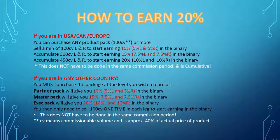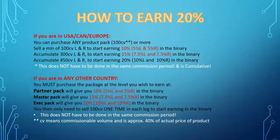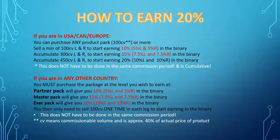How do you earn 20%? If you're in the USA, Canada, or Europe, you can purchase any of our product packs — you want that to be 100 CV or more, because you have some qualifications to meet. You then sell a minimum of 100 CV left and 100 CV right, so 100 CV in your left leg and 100 CV in your right leg, and you'll start earning 10% in the binary.